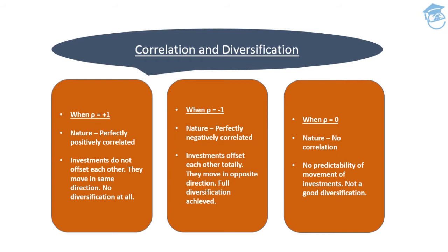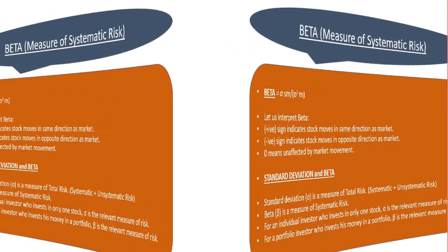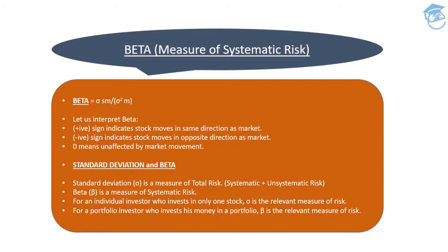Next topic: beta as a measure of systematic risk. Beta is the measure of systematic risk, which cannot be diversified away. Systematic risk only occurs when risk is related to the overall economy — you can't change it at all. If something is happening with a specific company or industry, that would be a combination of systematic and unsystematic risk, where you'd use standard deviation. But for systematic risk alone, beta is the measure.